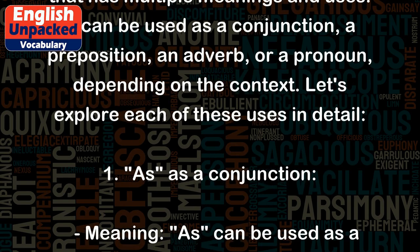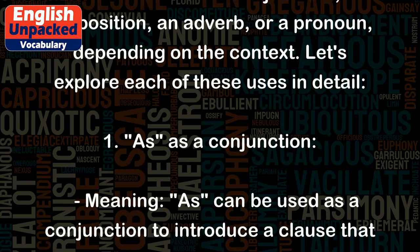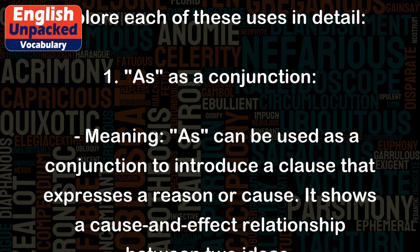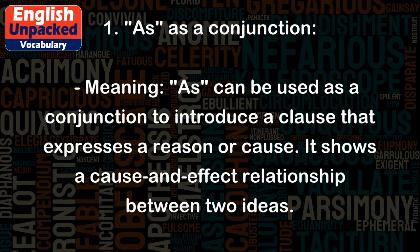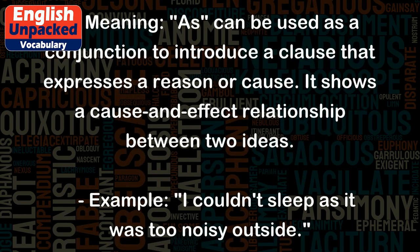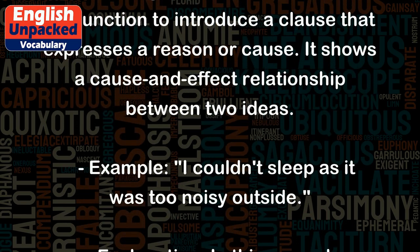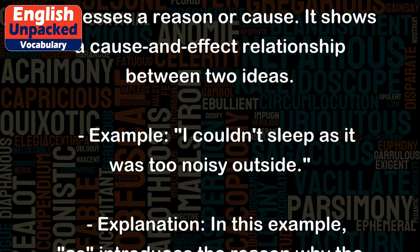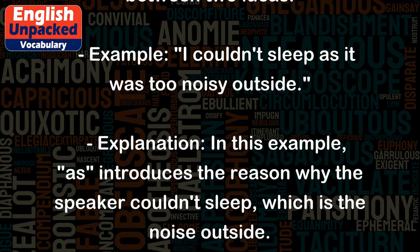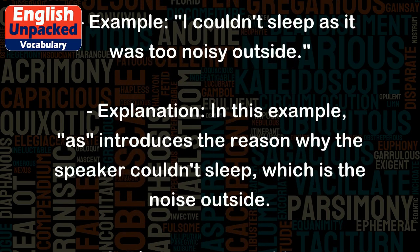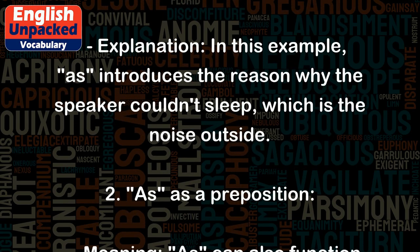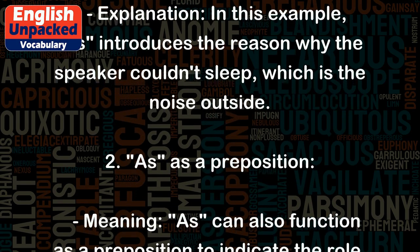Let's explore each of these uses in detail. 1. 'As' as a conjunction. Meaning: 'as' can be used as a conjunction to introduce a clause that expresses a reason or cause. It shows a cause and effect relationship between two ideas. Example: I couldn't sleep as it was too noisy outside. In this example, 'as' introduces the reason why the speaker couldn't sleep, which is the noise outside.